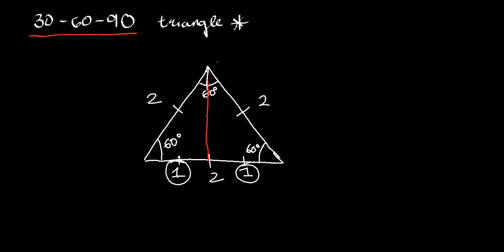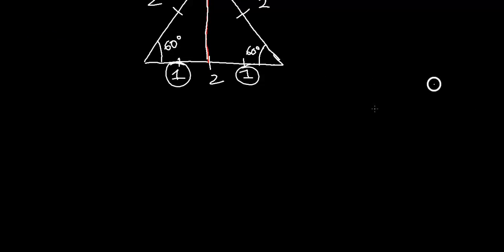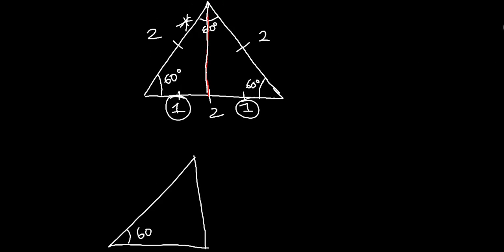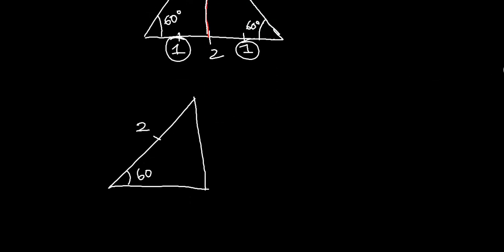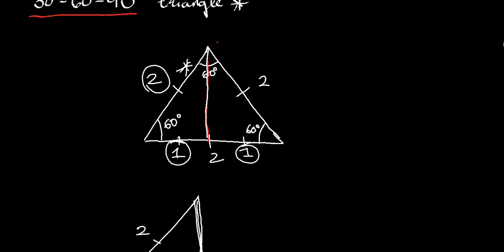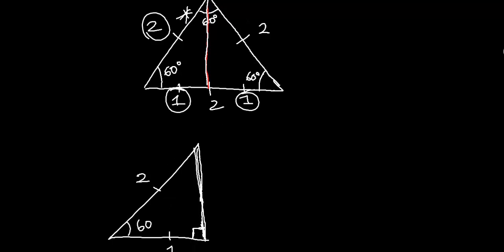And now what I'm going to do is pick one side to work with. I'm going to pick this side. I'm going to redraw this side right here on the bottom, so we have a better picture of what we are working with. So this was still a 60. This is a 2. This we said is a 1 because we divided the 2 in half. Now this is a 90 degree angle because it comes straight, right? That's the point of this, so we get the angle measurements correct.